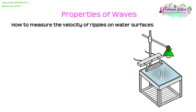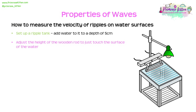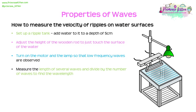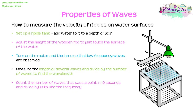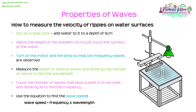To measure the velocity of ripples on water surfaces: set up a ripple tank with water to a depth of about 5 centimetres. Adjust the wooden rod so it just touches the surface, then turn on the motor and lamp to observe low frequency waves. Measure the length of several waves and divide by the number of waves to find the wavelength — more accurate than measuring just one wave. Count the number of waves passing a point in 10 seconds and divide by 10 to find frequency. Then use wave speed equals frequency times wavelength.